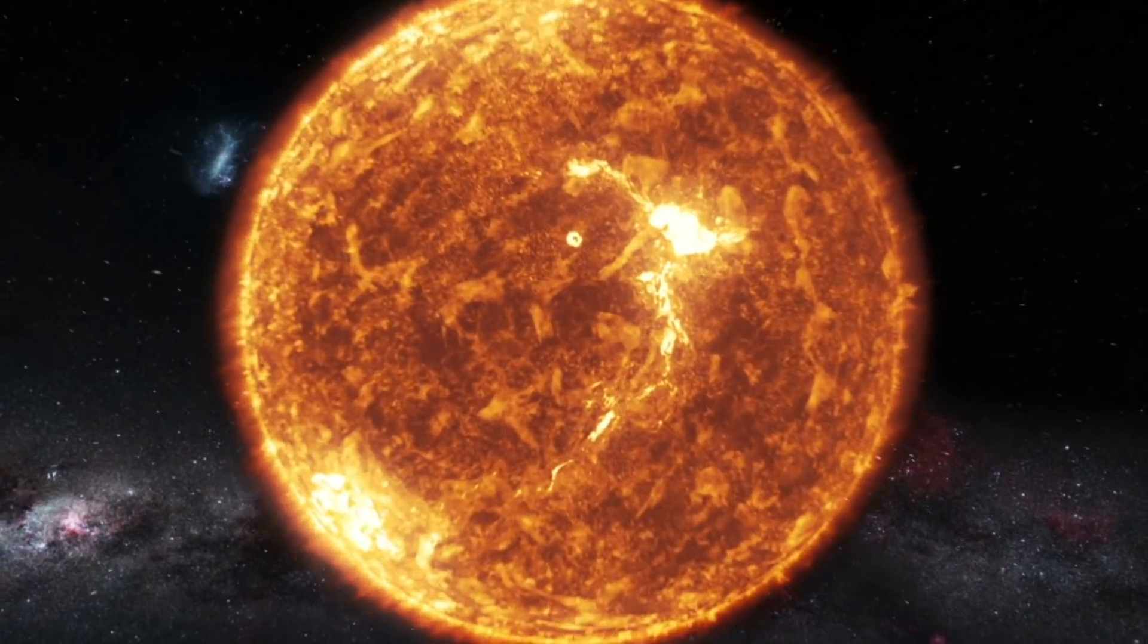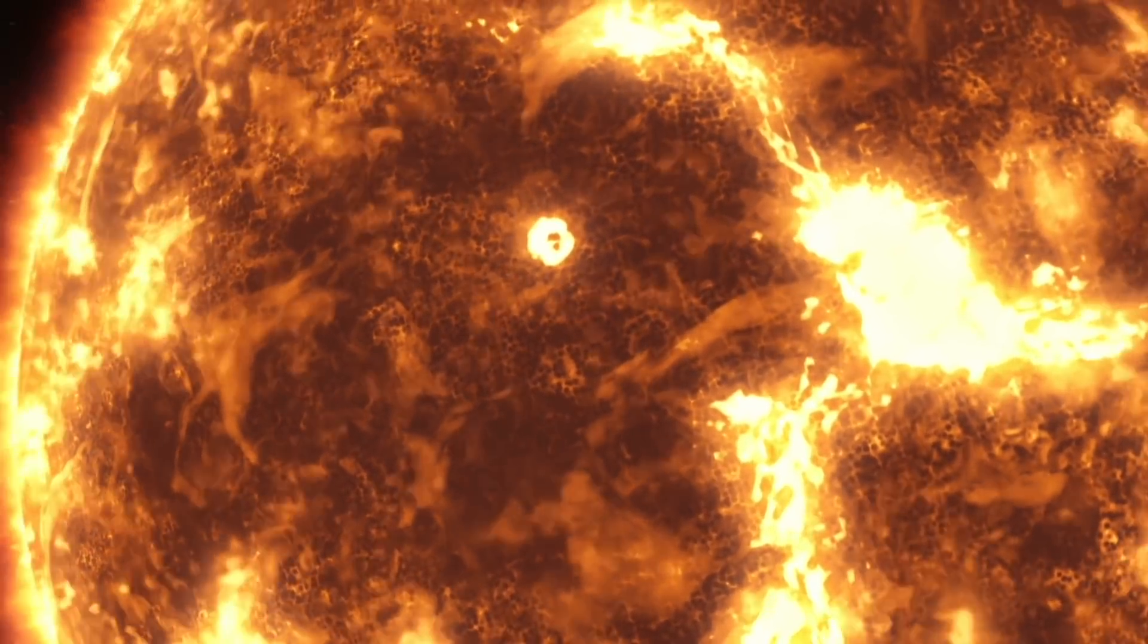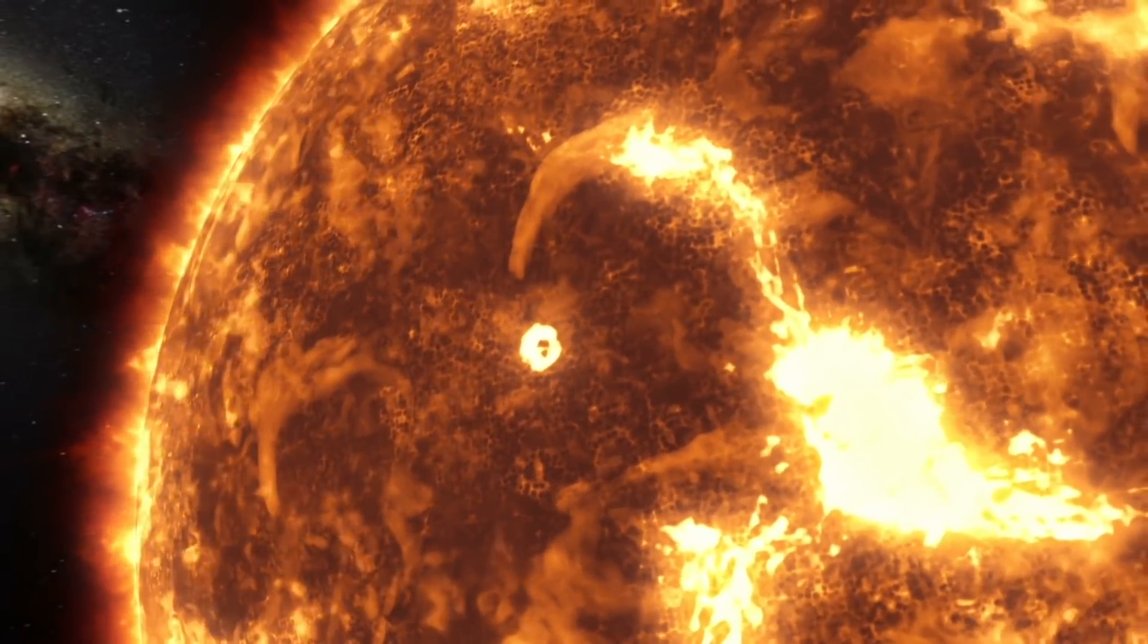Scientists have figured out that our Sun is around 110 times the diameter of the Earth. This means that over 1 million Earths could fit inside the Sun.